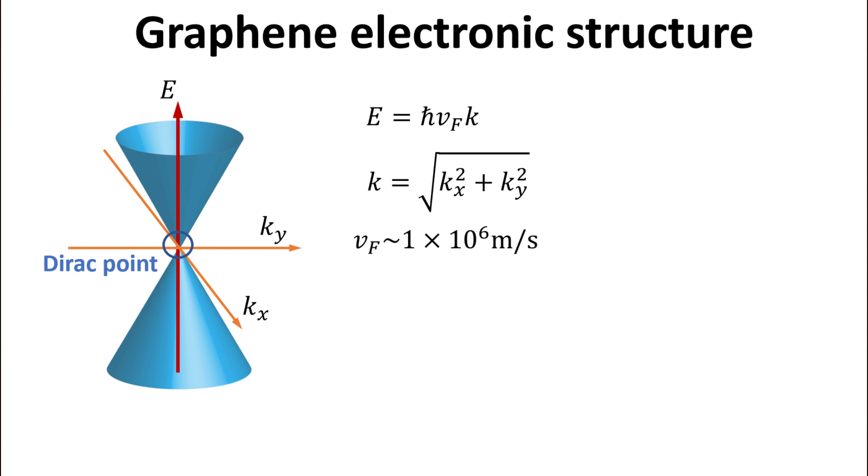The energy has a linear dispersion relation written as shown, where h-bar is the Planck constant and Vf is the electron Fermi velocity, which is about 300 times smaller than the speed of light in free space. The energy where the two cones intersect is called the Dirac point, and we have conveniently set the Dirac point energy to be zero. The band above it is called the conduction band, while the band below is the valence band.